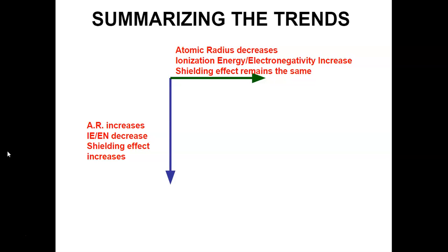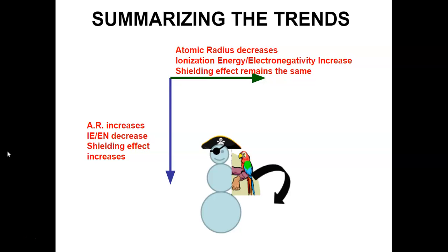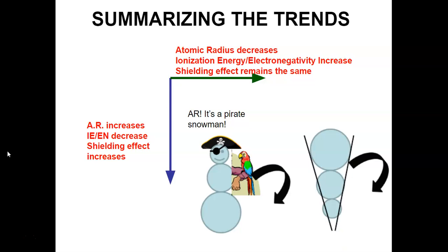Here's a way to remember these trends using clip art. This pirate snowman — pirates say 'arrr' — represents atomic radius: it increases as you go down, and if the snowman fell over following the arrow, it would decrease going to the side. The 'IE scream cone' represents ionization energy and electronegativity: it decreases down and increases across. For shielding effect, there's no cheesy mnemonic — just understand it conceptually. These are memory tools, not explanations.